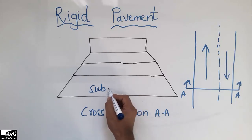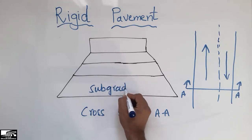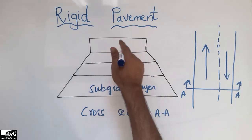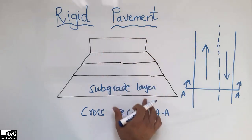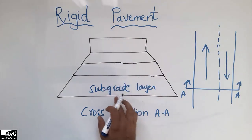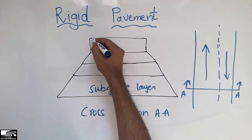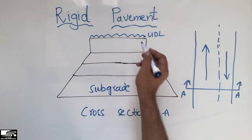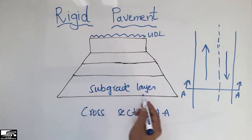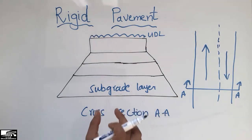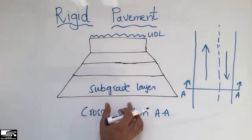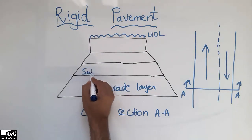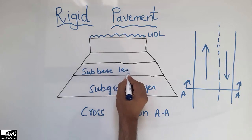The bottommost layer of the rigid pavement is the subgrade, which is the natural soil that has been compacted so that it can resist the whole load. The whole load is transferred from above to the bottom, and the subgrade layer must have high strength to resist and take the entire vehicle load.